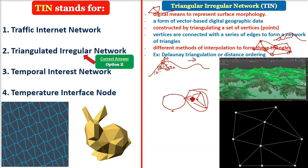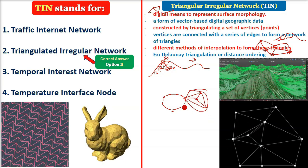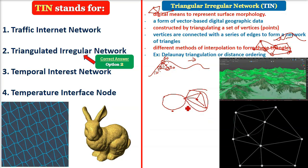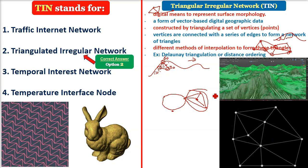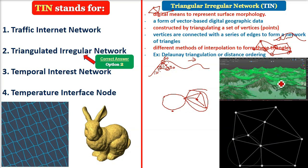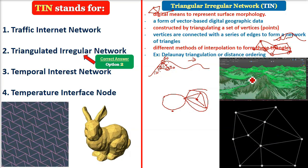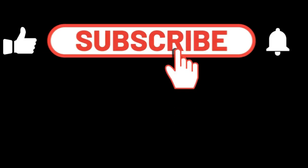The basic idea of showing anything in 3D is all about having a mesh or a network, and in GIS or image processing, TIN is used to do that. See you next time.